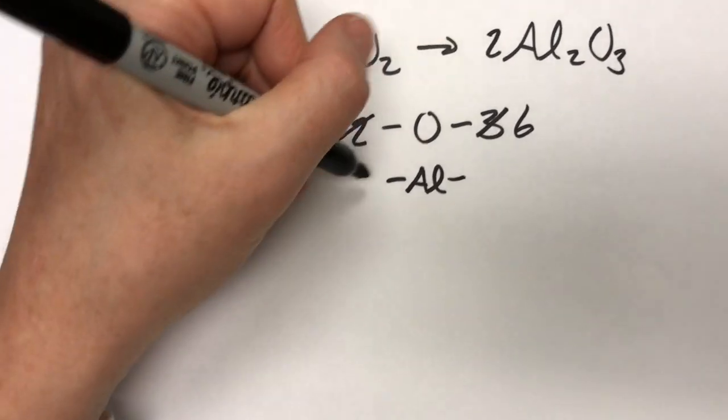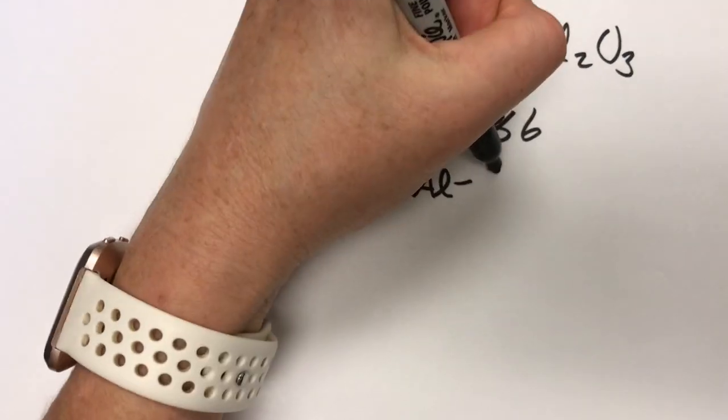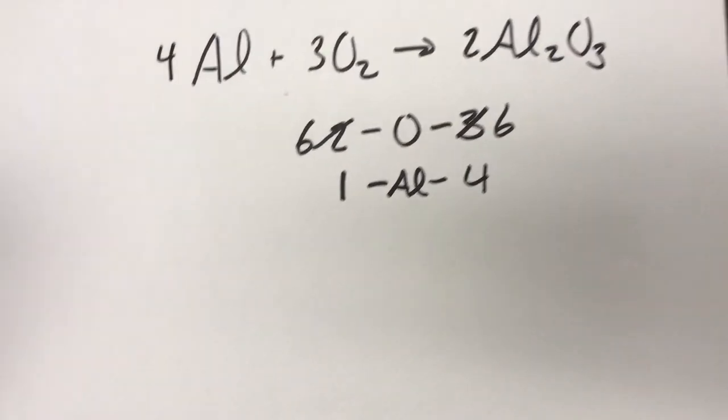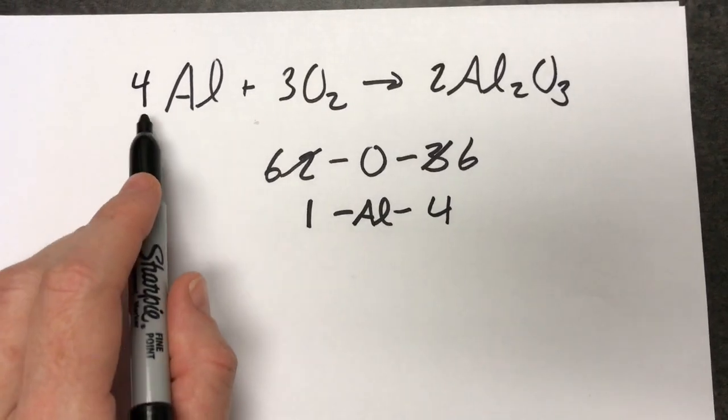Now on my left hand side I have one. On my right hand side I have two Al2's, in other words four. And four divided by one is four. And this would be our final balanced reaction.